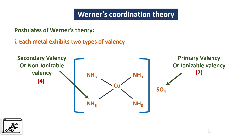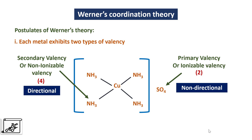The Nessler's reagent test will be negative. The primary valency is non-directional — there is no specific direction for the sulfate ion, it is just associated with the Cu(NH3)4 complex — whereas the secondary valency is directional, because there is a specific direction in which all 4 bonds are directed in space.